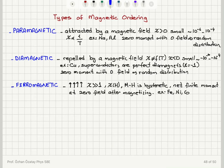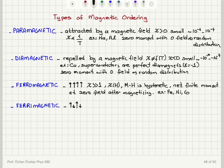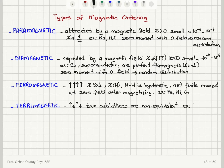Then we talked about ferrimagnetic ordering. Ferrimagnetic means we have up moments and down moments but not equal in size, so there is a net moment. There are two sublattices that are non-equivalent and do not compensate for each other. An example is magnetite or lodestone, Fe3O4.